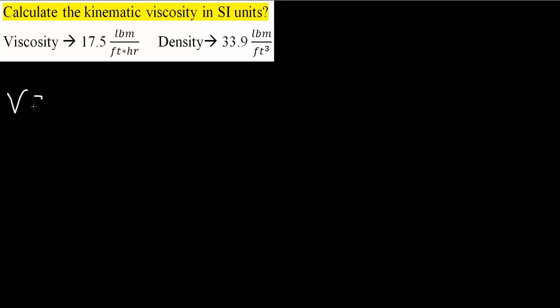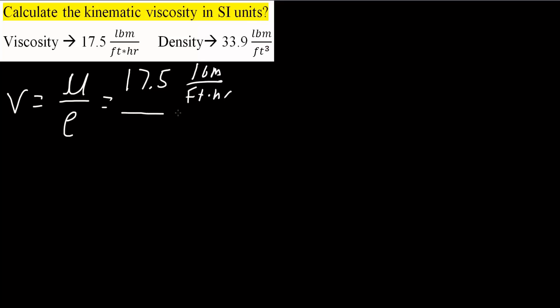The formula for kinematic viscosity (ν) is equal to viscosity (μ) divided by density (ρ). So we have 17.5 pound mass per feet times hour divided by 33.9 pound mass per feet cubed. Looking at just the numbers, 17.5 divided by 33.9 gives us 0.516.